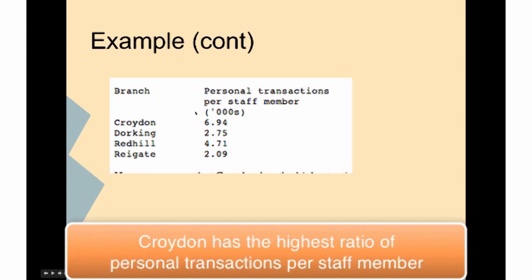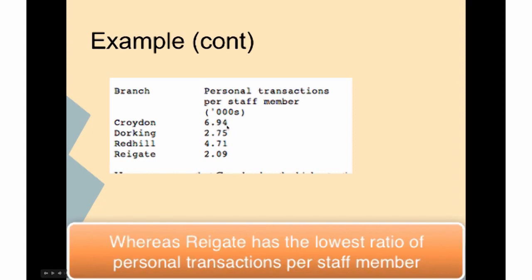Here we see that Croydon has the highest ratio of personal transactions per staff member, whereas Reigate has the lowest ratio of personal transactions per staff member.